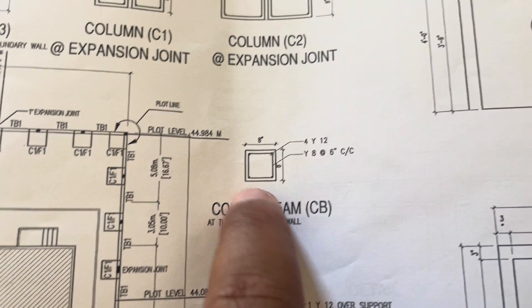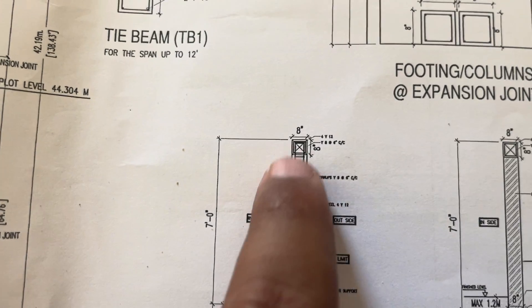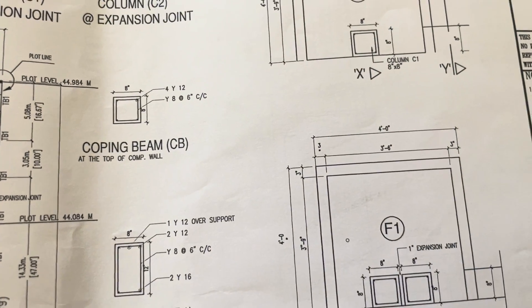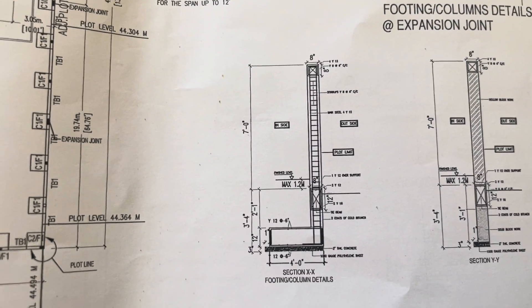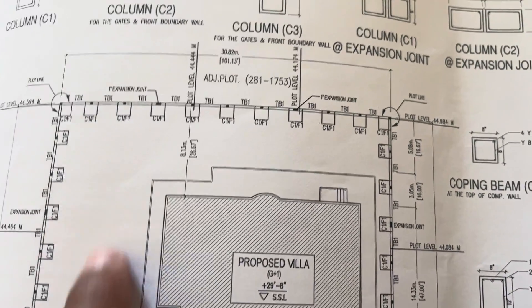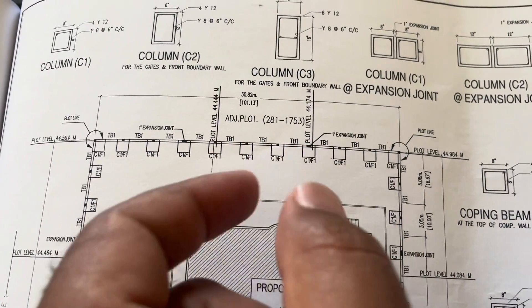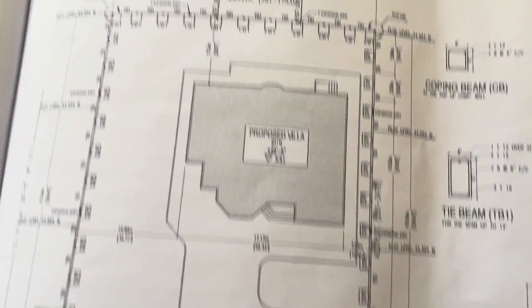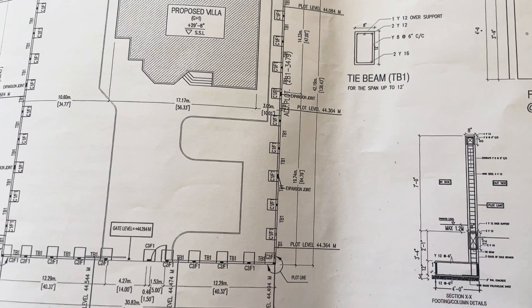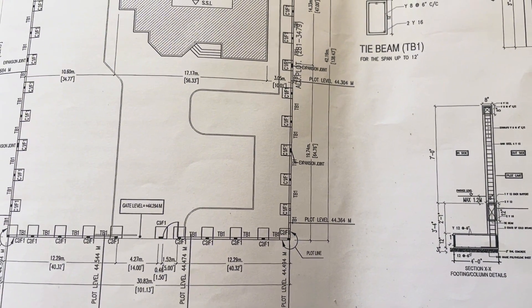The coping beam ties are spaced at 6 inch center to center and placed on top of the compound wall. You can see from the cross-section it sits right on top of the wall — that is the coping beam detail. For the layout, you will use your plot limits and fix points to determine the spacing between columns. So this is the video regarding compound wall structure details for columns, footings, and beams. Thank you for watching and please subscribe to the channel for more latest updates.